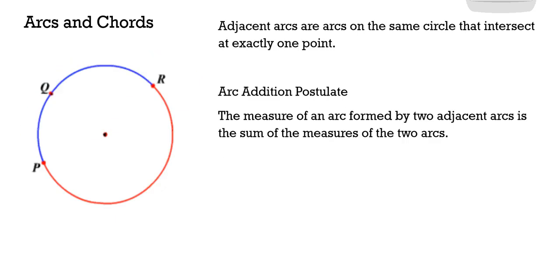Adjacent arcs are arcs that are on the same circle that intersect at exactly one point. We've got our minor arc PQ and minor arc QR are adjacent arcs because they share exactly one point in common. We've done segment addition, we've done angle addition, and now we can do arc addition as well. So we have minor arc PQ plus minor arc QR equals minor arc PR.